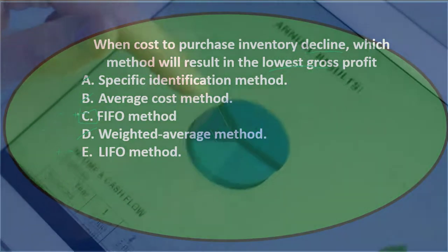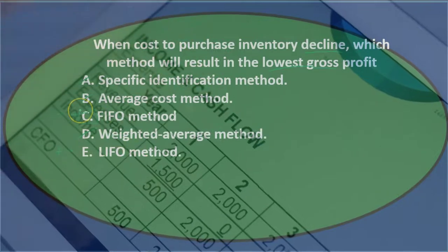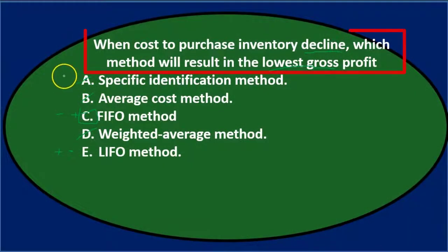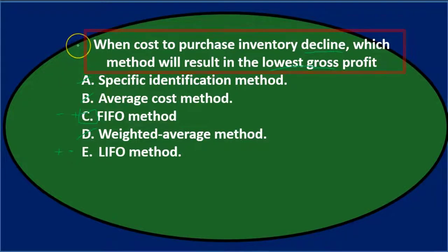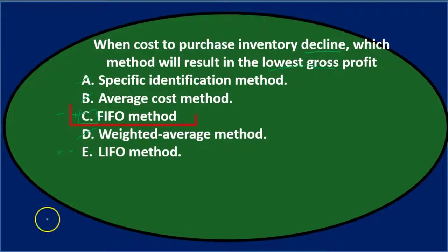You could work through all the cost flows to verify, but this shortcut memorization technique can be faster in a test-taking situation under pressure. So once again, when costs to purchase inventory decline, which method results in the lowest gross profit — C, first in, first out.